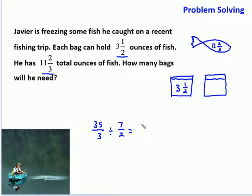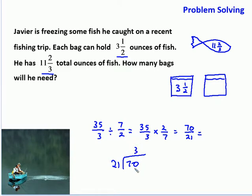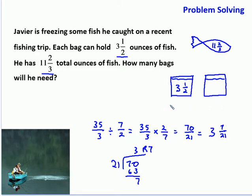We do our keep-change-flip: we keep thirty-five thirds, change division to multiplication, and flip seven halves to give us two-sevenths. That leaves us with seventy twenty-firsts. We change that back to a mixed number — twenty-one goes into seventy three times, with a remainder of seven, giving us three-and-seven-twenty-firsts. So, how many bags will he need? Three-and-seven-twenty-firsts. We can't have seven-twenty-firsts of a bag, so how many bags will we need? We need three and one more — we will need four bags.